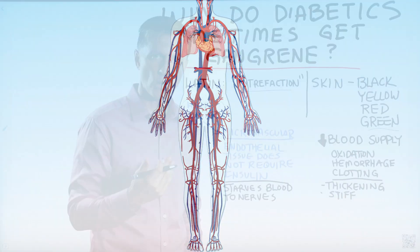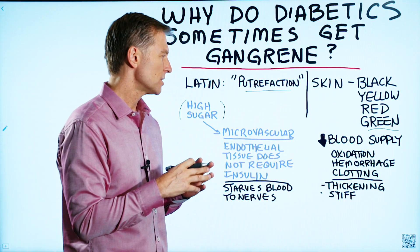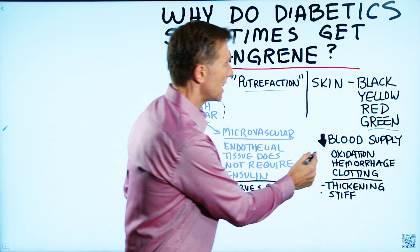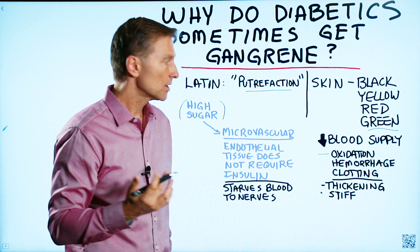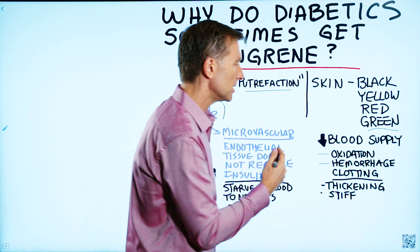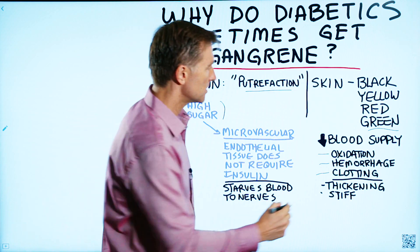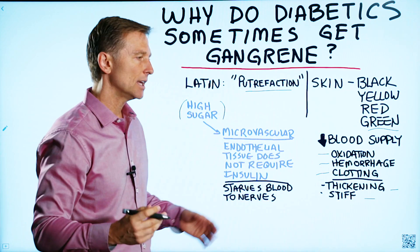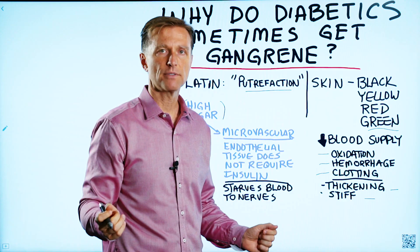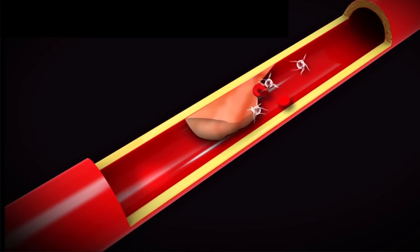When you expose glucose to your vascular system, you get all sorts of destruction. You get massive oxidation, which creates free radicals, hemorrhaging — so you're getting bleeding — and clotting. The vascular system is becoming thicker and stiffer, and you're getting a healing response, an inflammatory response.